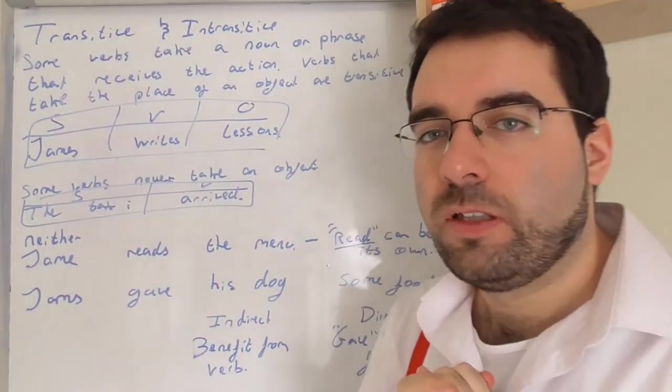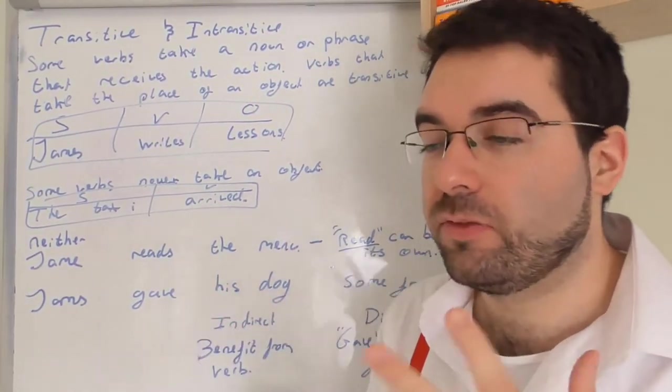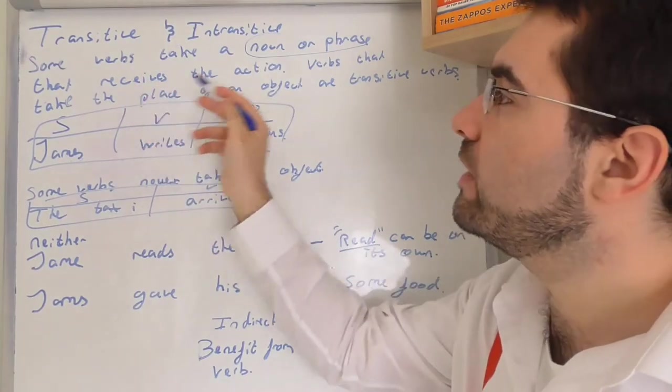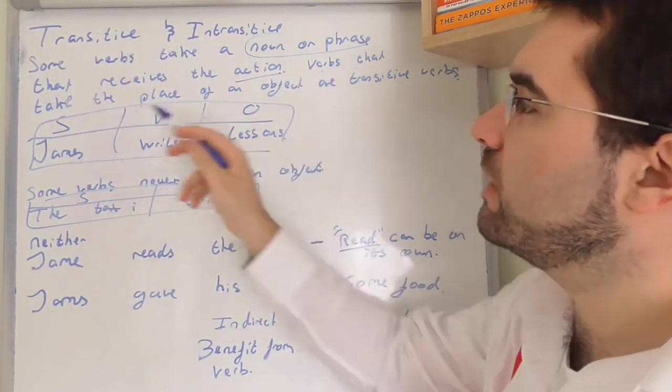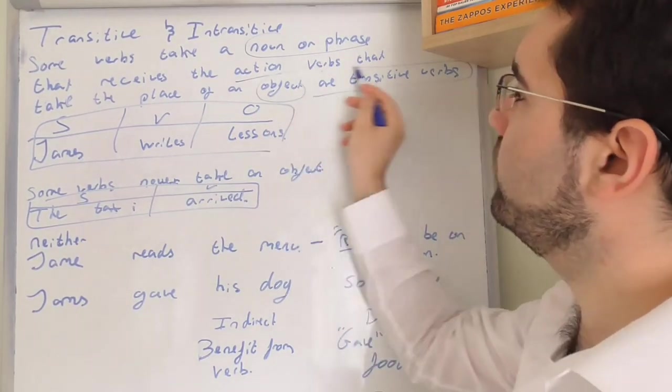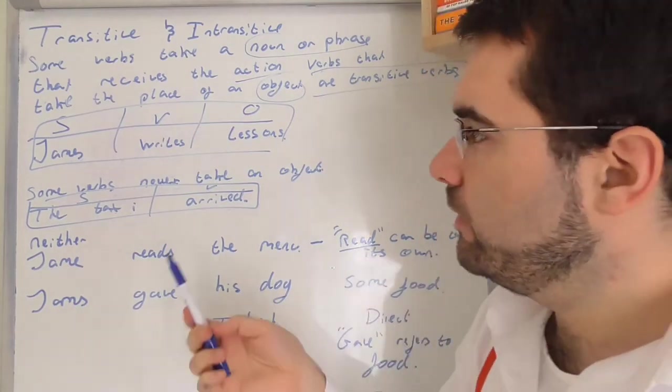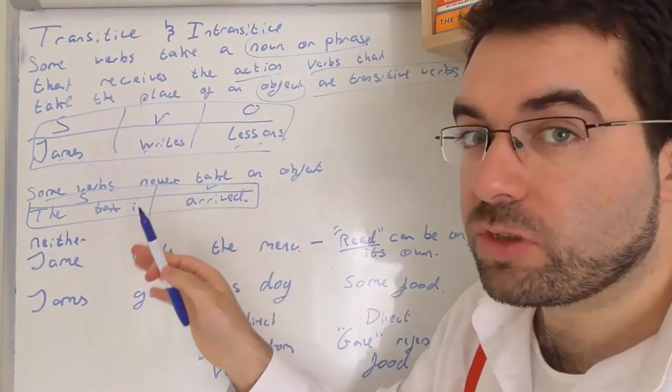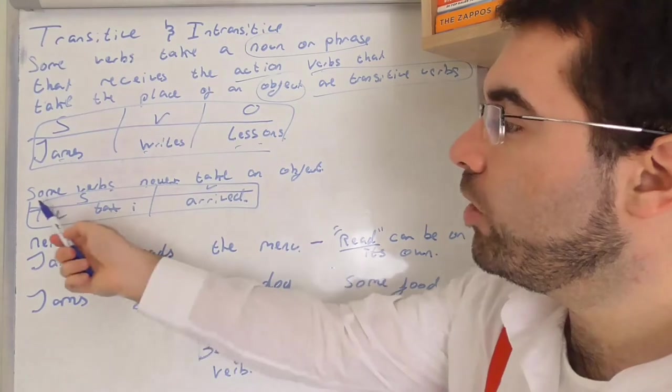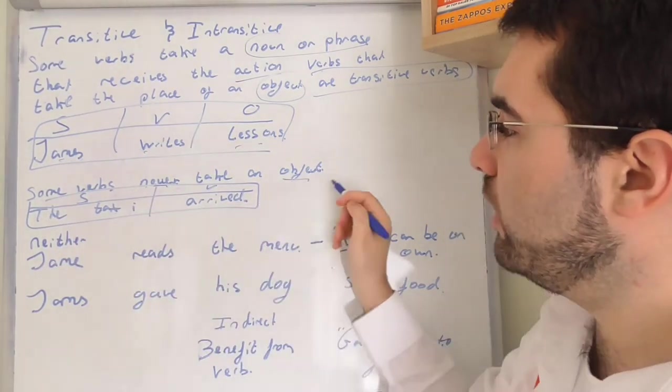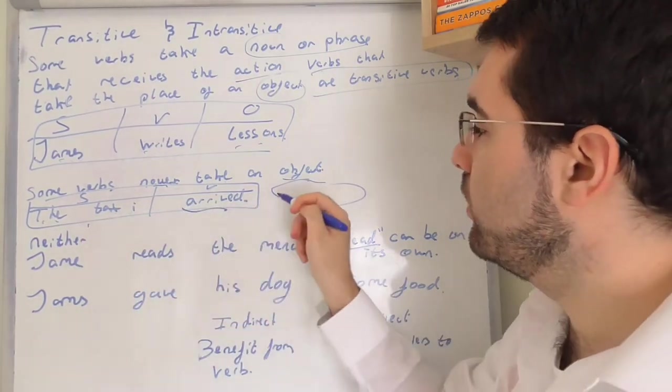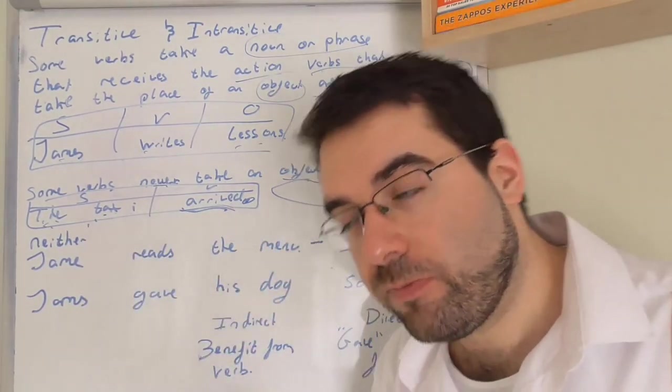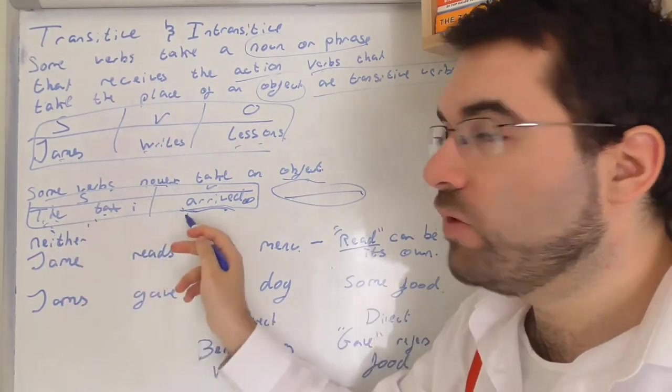So let's look at these transitive verbs then. Transitive and intransitive. Let's have a look. So some verbs take a noun, a phrase, or a phrase that receives the action. Verbs that take the place of an object are transitive verbs. So let's look at some examples then. Usual, James writes lessons. Subject, verb, object. Usual stuff. But some verbs never take an object. So there's nothing here. So subject, the taxi arrived. That's it, full stop. The plane flew. The boat sank. Nothing else, that's it. Subject, verb, that's it. The subject did something, no object. So not like the taxi arrived here. No, no, no. The taxi arrived, that's it. The plane landed, that's it.